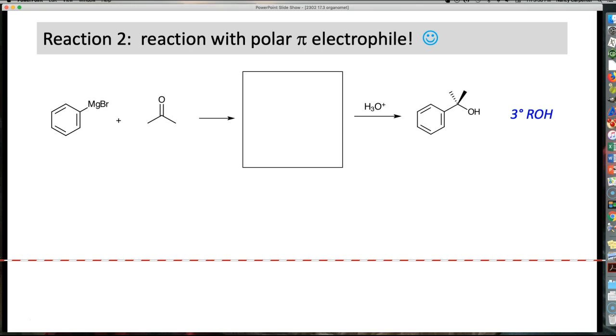So notice, a Grignard right here, or organolithium, plus a ketone right here, gives you, voila, a tertiary alcohol. Now I'm just going to highlight some things here. This was my ketone, and this was my Grignard. We will come back to this. Basically we are disconnecting that bond right there. We just made that bond when we added the Grignard to the ketone.